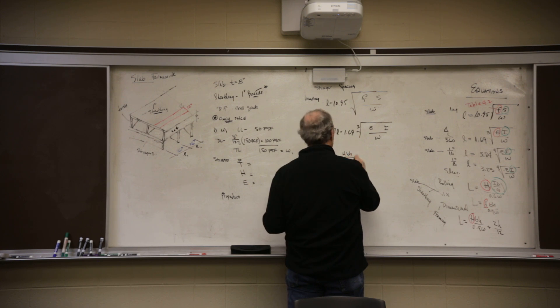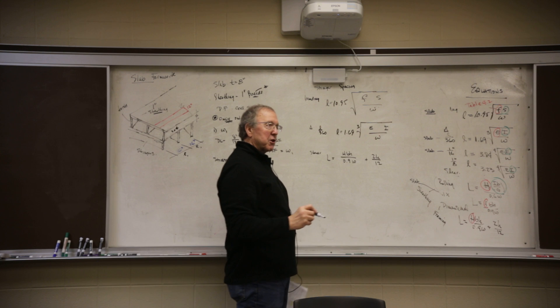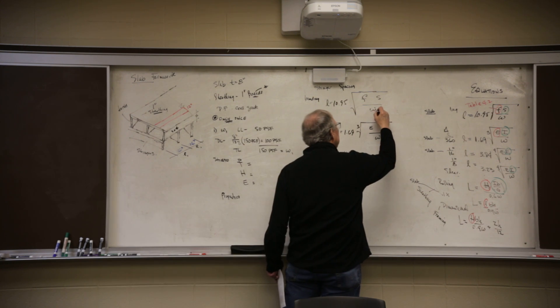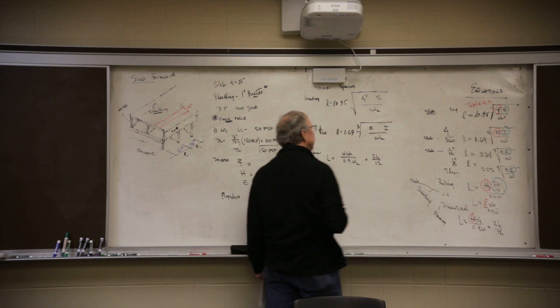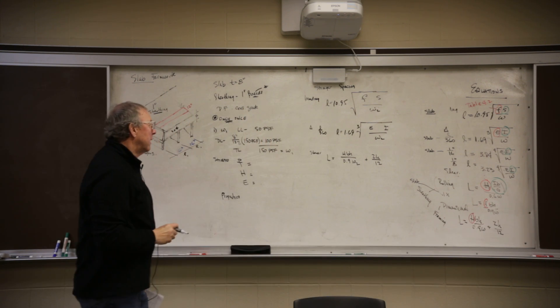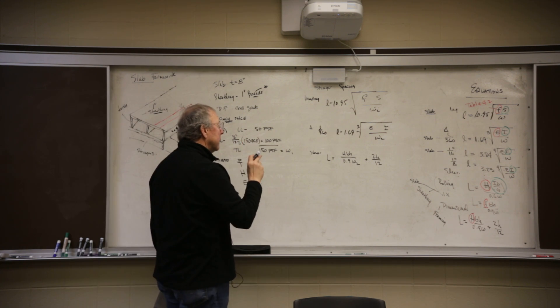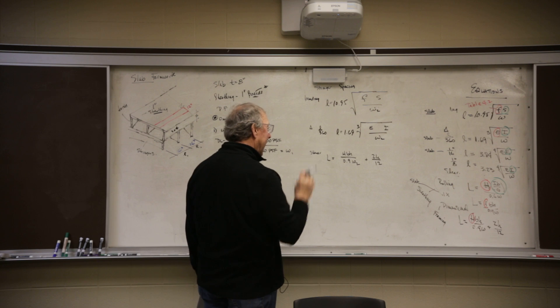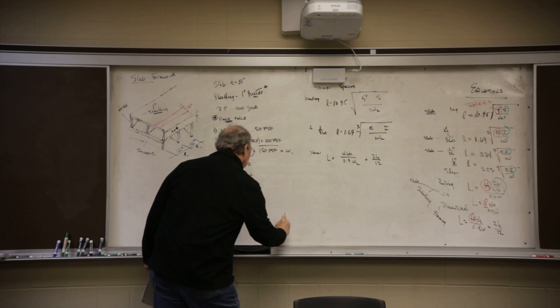I equals bh cubed over 12. Tau equals 0.9wL squared plus 2h over 12. Okay, now I'm going to change the equations. This is going to be w2, w2 and w2. So I need w2. I need all of these. And it looks like I need s, i, b and h.